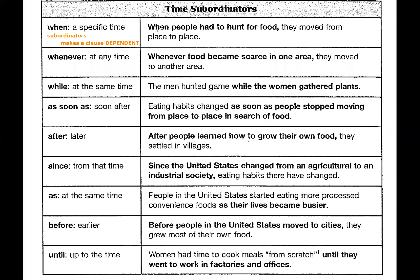Let's break down the first sentence: 'When people had to hunt for food, they moved from place to place.' Before our subject 'people,' we have our subordinator 'when.' That is why the first part of the sentence is our adverbial clause. And why is there a comma here? Whenever our adverbial clause comes before the independent clause — or maybe you have a phrase or a conjunctive adverb — you need something called the introducer comma, followed by your independent clause.